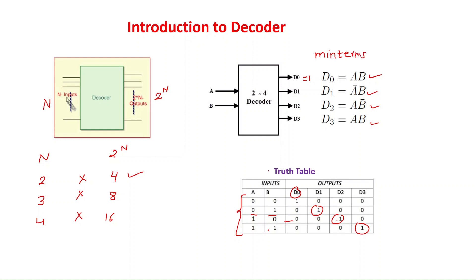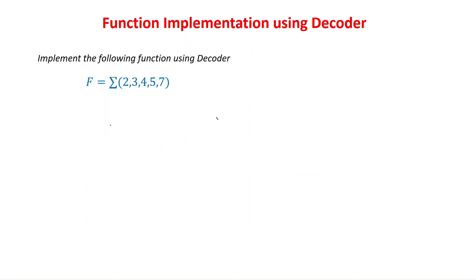Let's understand a few examples based on the decoder. Now we'll see a numerical problem. The function is given in sum of min terms. We will see the implementation of this function using a decoder. The function is given in sum of min terms: min term 2, 3, 4, 5, and 7. So it can be written as m2 + m3 + m4 + m5 + m7.